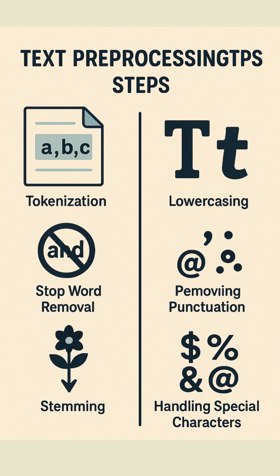Common steps in text preprocessing: The first is tokenization, which means splitting text into words or tokens. The second is lower casing, which means converting all characters to lowercase.